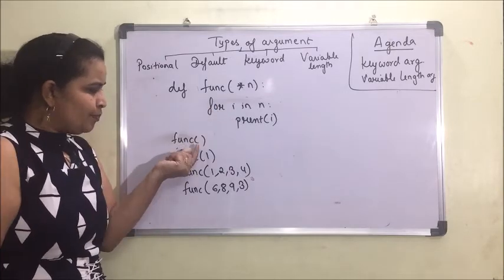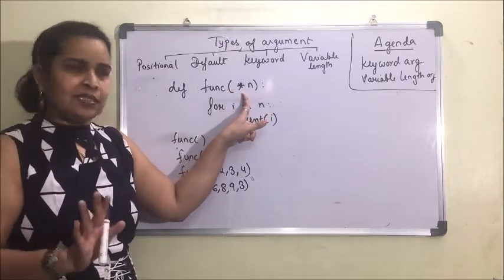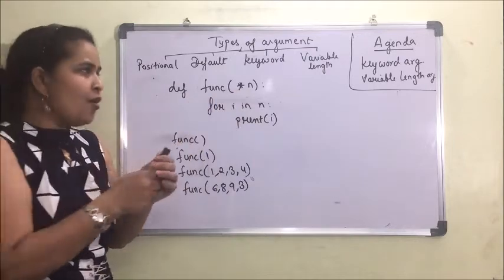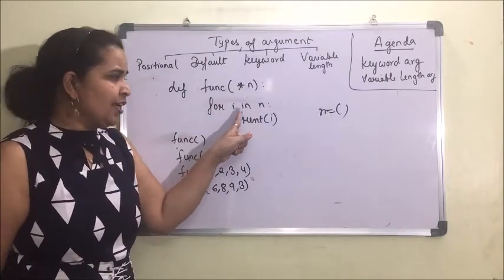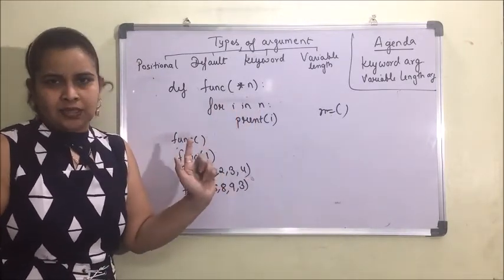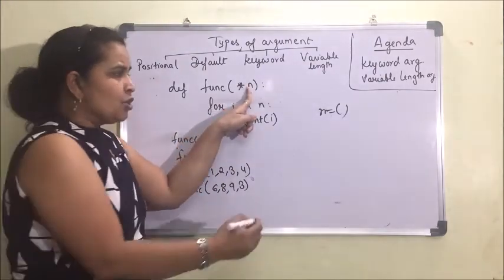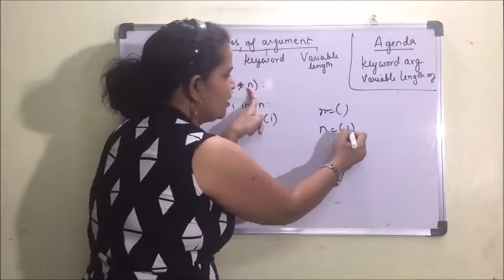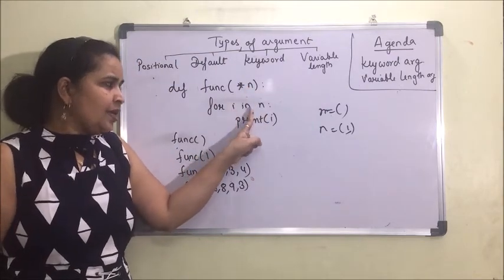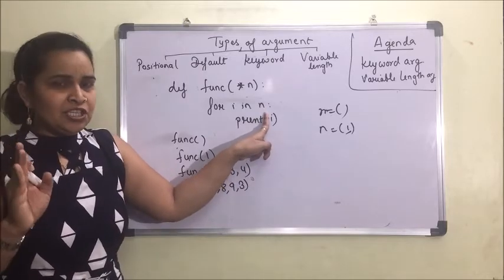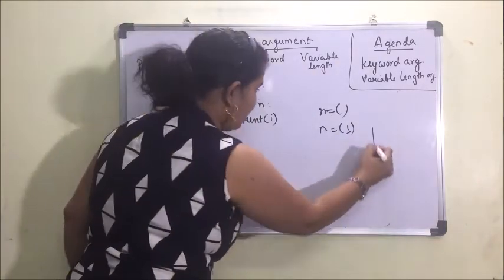When we send zero arguments, the parameter n will become an empty tuple, and the for loop will print nothing. When we send one argument, n will be a tuple containing just that one value. The for loop will access each element of the tuple one by one, so in this case the output will be just that one value.